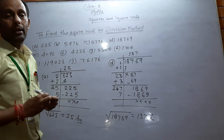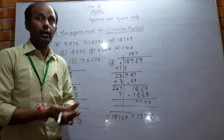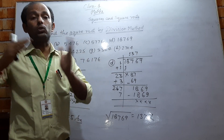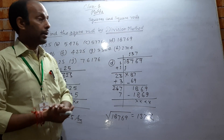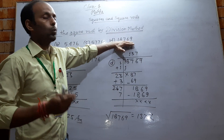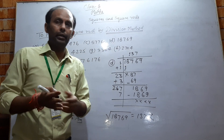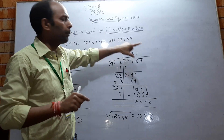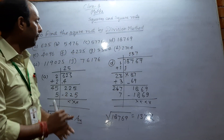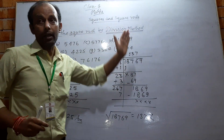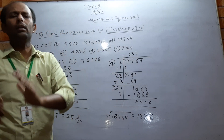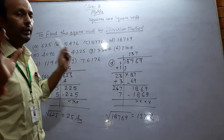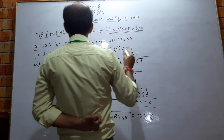There are some additional questions that come up, such as: how many digits will the square root of a given number have? To find this, make pairs of the number. However many pairs there are, that is the number of digits in the square root. We will also tell you tricks for finding squares using the diagonal method.